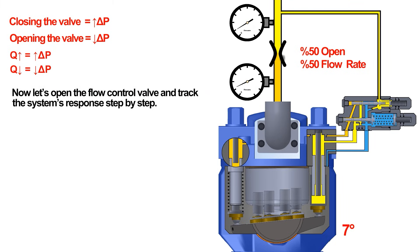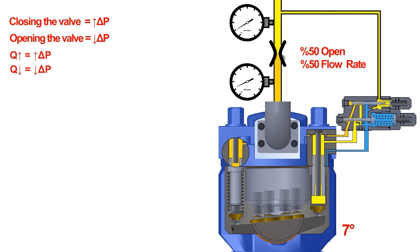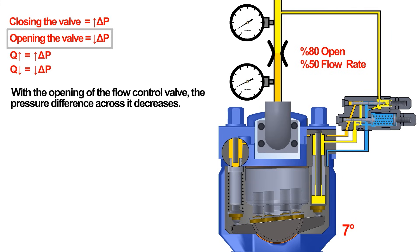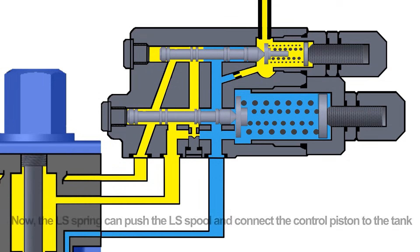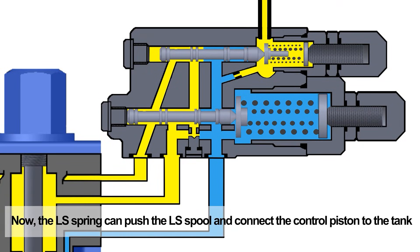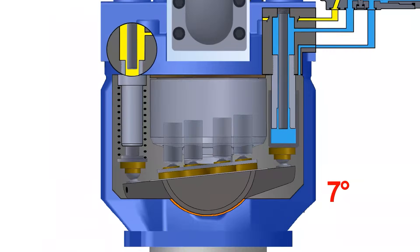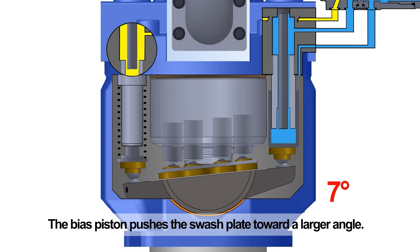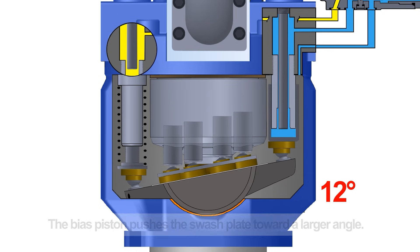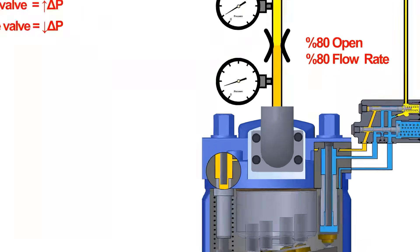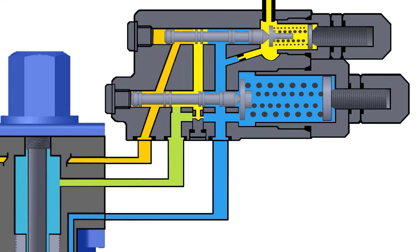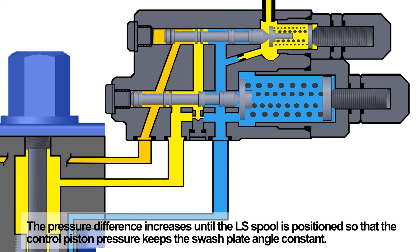Now let's open the flow control valve and track the system's response step by step. With the opening of the flow control valve, the pressure difference across it decreases. The LS spring can now push the LS spool and connect the control piston to the tank. The bias piston pushes the swash plate toward a larger angle. As the angle and pump flow rate increase, the pressure difference across the flow control valve rises again, until the LS spool is positioned so that the control piston pressure keeps the swash plate angle constant.